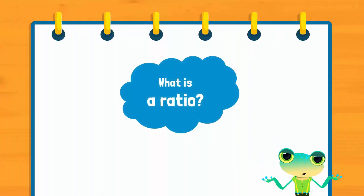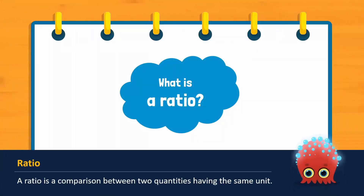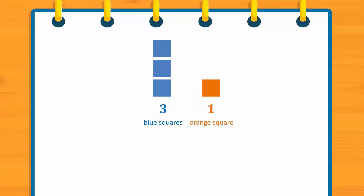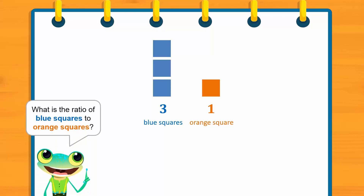What is a ratio? A ratio is a comparison between two quantities having the same unit. Take a look at this example: there are three blue squares and one orange square. What is the ratio of blue squares to orange squares? We can show this ratio in different ways — we can use the colon to separate the numbers, or we can show it as a fraction. In this video, we will use numbers separated by a colon to show ratios.